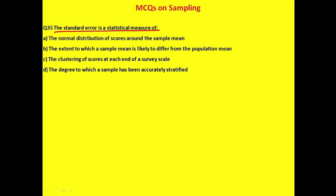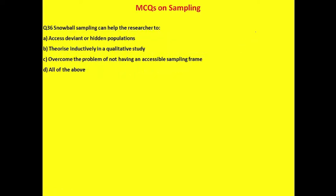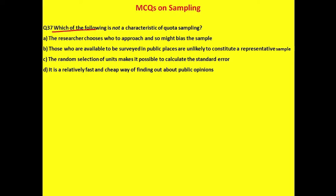Question 33: It is helpful to use a multi-stage cluster sample when — the population is widely dispersed geographically, you have limited time and money for traveling, or you want to use a probability sample to generalize results. All three options are correct, so the correct answer is option D: all of the above. Question 34: An increase in sample size reduces the sampling error. Using the formula — standard error = sigma / √n — as sample size n increases, sampling error decreases. The correct answer is option A.